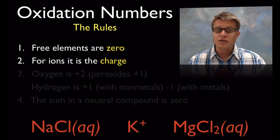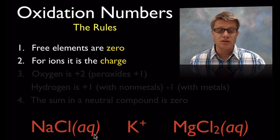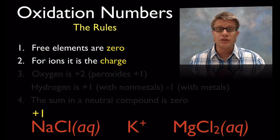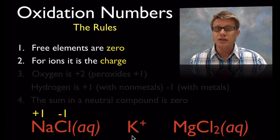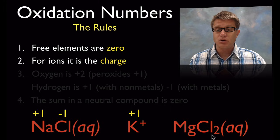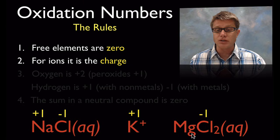If we've got ions, the oxidation number is going to match the charge. Looking at sodium chloride in aqueous solution: sodium is an alkali metal so it's a plus 1 charge, and chlorine is a halogen so it's a minus 1 charge. You'll start to notice these add up to 0. Potassium is plus 1. For magnesium chloride, chlorine is minus 1, and since we have 2 of those, magnesium has to be plus 2.